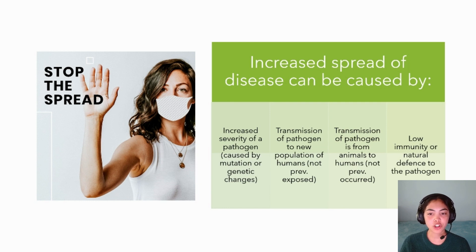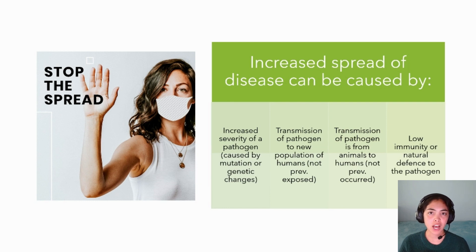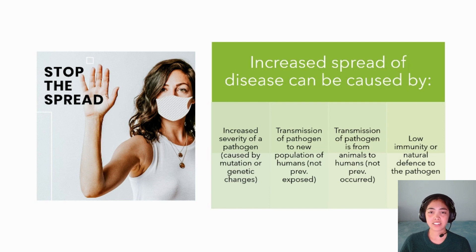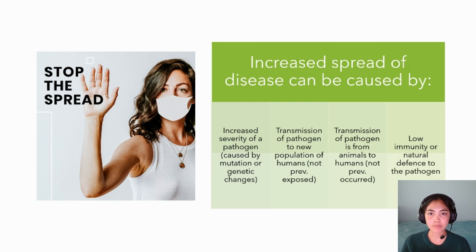The next factor is the transmission of a pathogen to a new population of humans. Thinking about when Captain Cook and the British colonies came and invaded Australia, they brought new pathogens that had never before been seen by the indigenous population. These diseases spread rampantly through the indigenous population, killing many of them, because they had never been exposed before and had much lower immunity compared to the British.